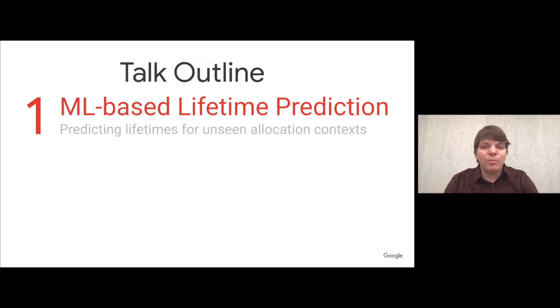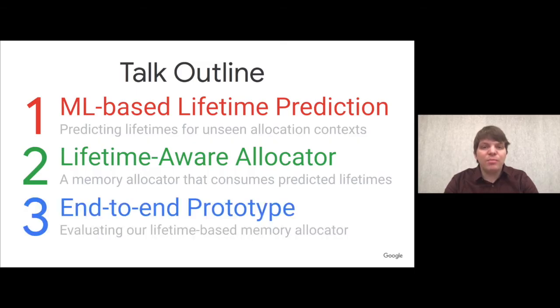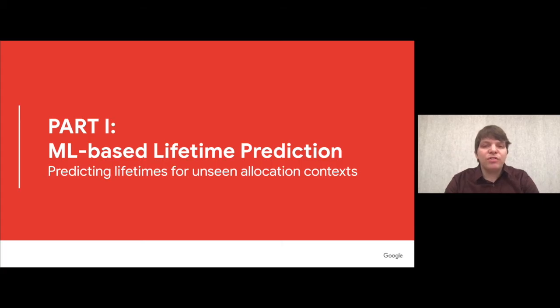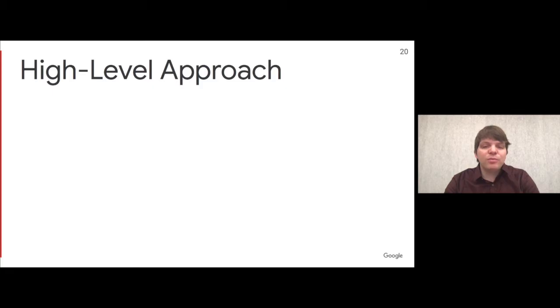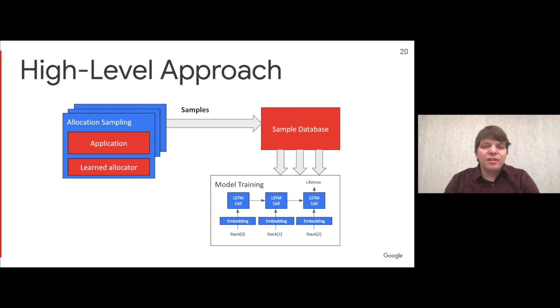In this talk, I want to show you how a machine learning-based lifetime prediction approach works, then show you a fundamentally new type of memory allocator that takes these potentially imprecise predictions and uses them to reduce fragmentation. To our knowledge, this is the first memory allocator entirely built around lifetime classes instead of size classes. Finally, I'll show you an end-to-end prototype and how it reduces fragmentation in server workloads. At a high level, the approach is similar to profile-guided optimization.